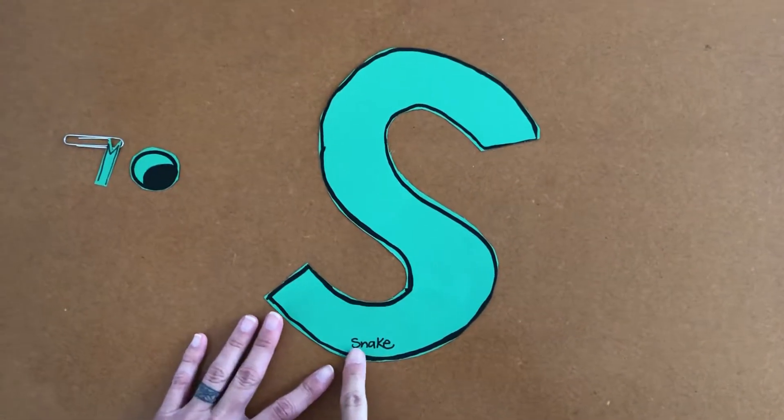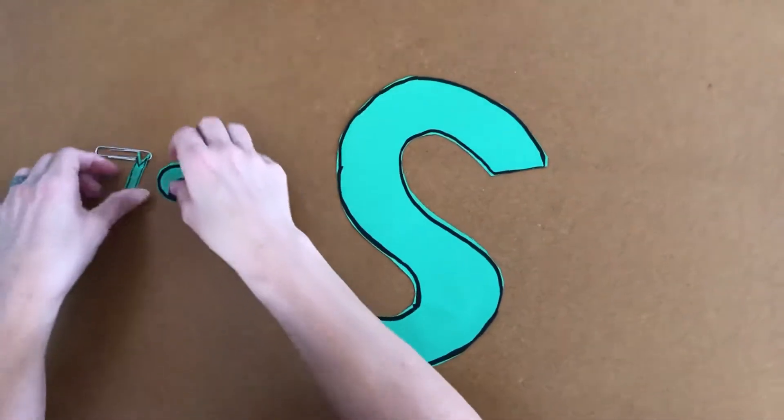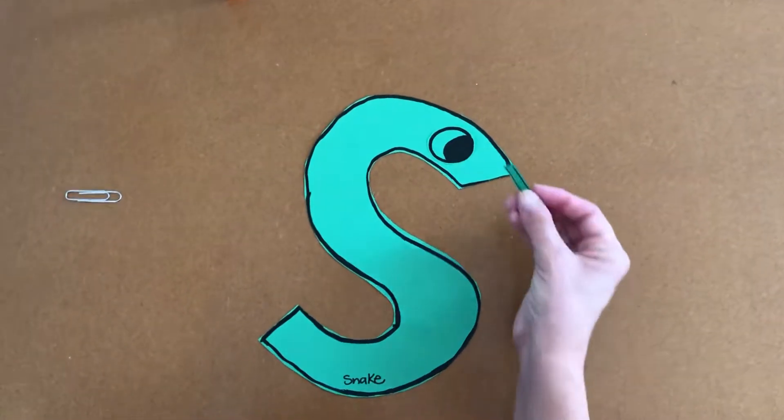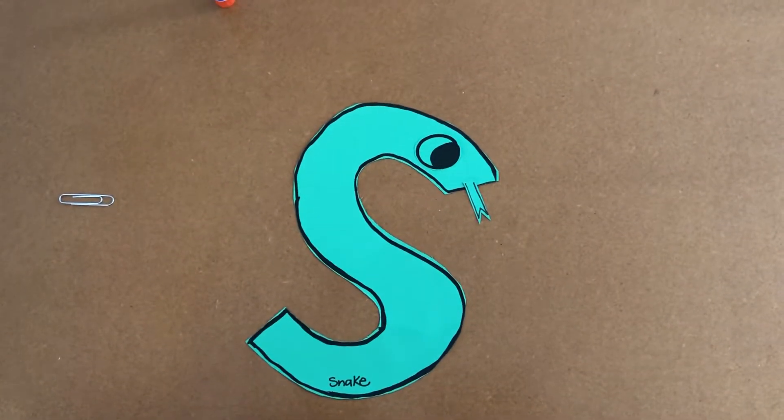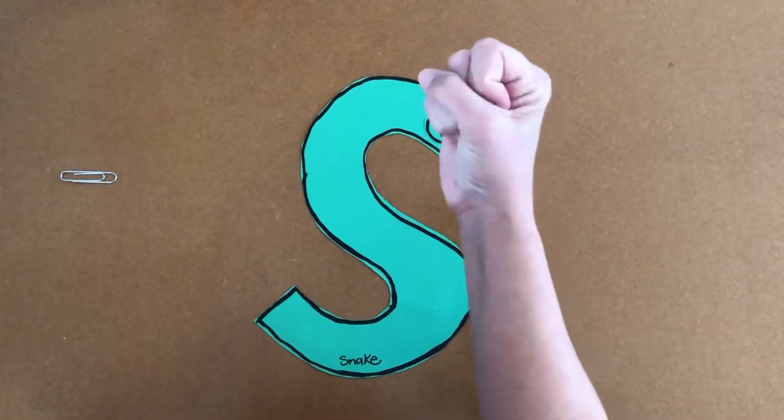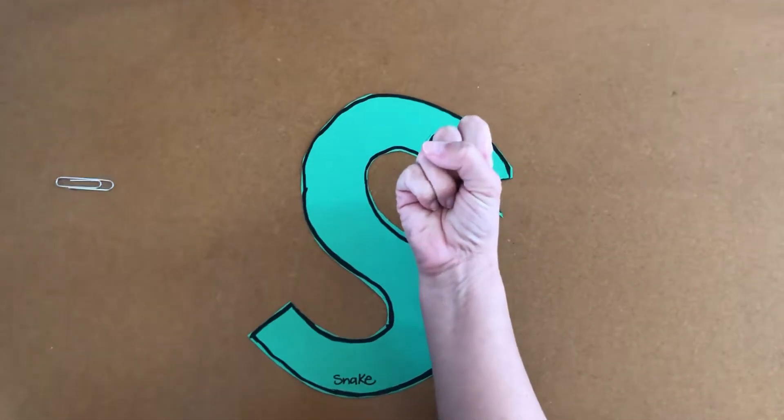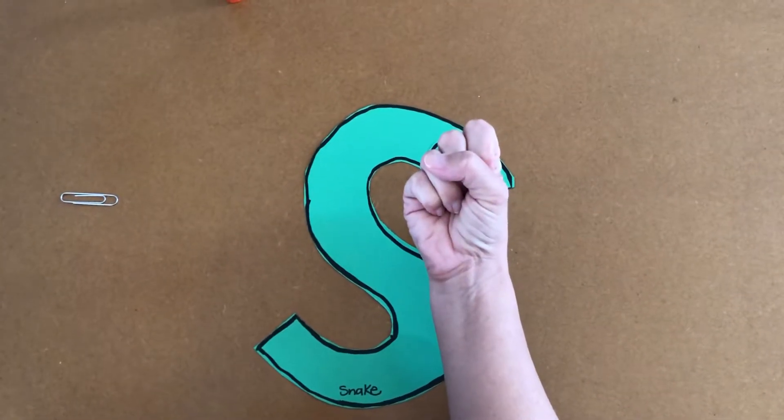This down here says snake. And then we're going to put our pieces on. We've got an eyeball and we've got a forked snake tongue. Snake. Remember when you're making the sign for S, your thumb goes in front of your fingers like this. This is how you make an A. This is how you make an S.